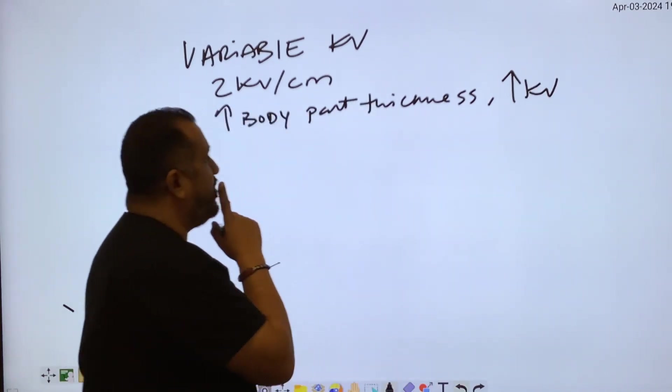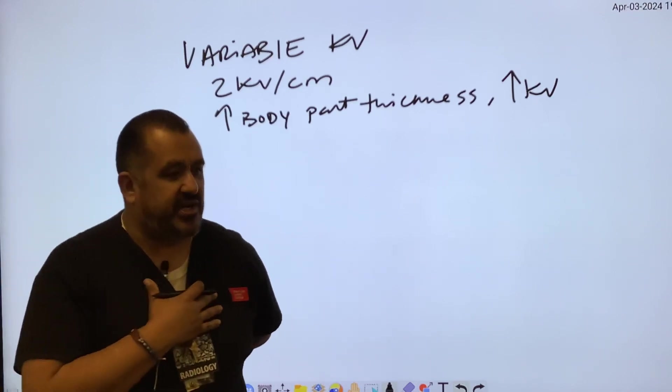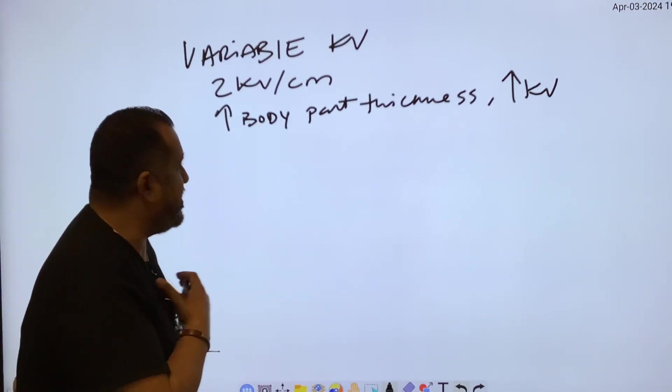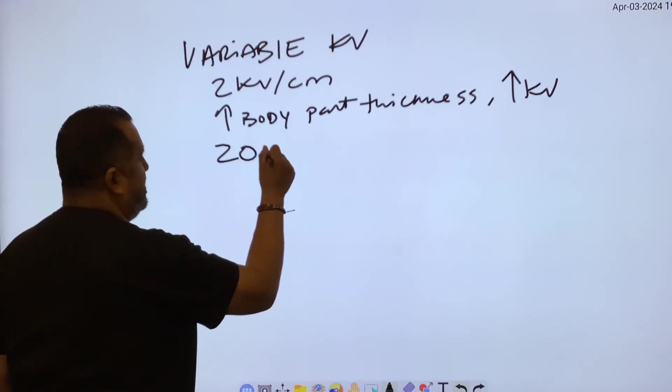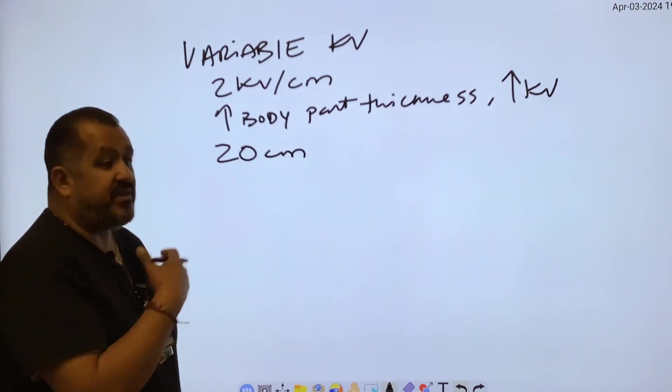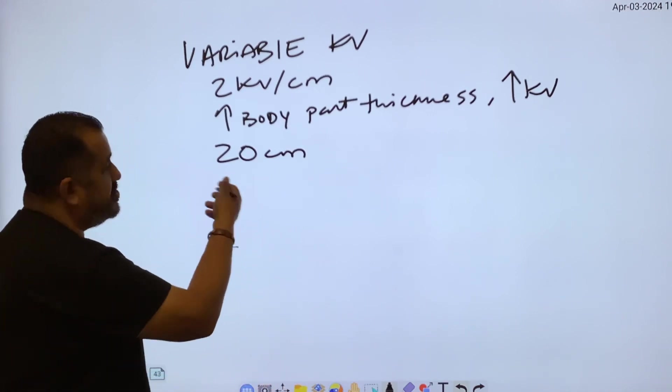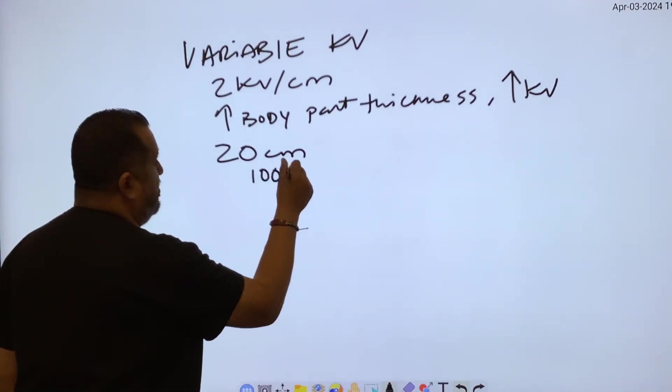Let's say we have chest x-rays. The average dimension for a chest, if you measure from front to back, is 20 centimeters, for example. Now, if the body part was more than that, then obviously you'd have to go up in KVP, correct? So let's say 20 centimeters was 100 KVP.